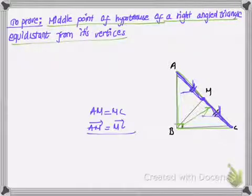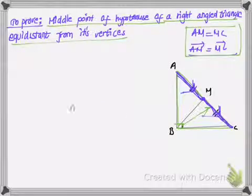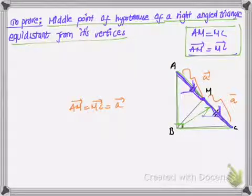Because they have the same direction and same magnitude. Now let us consider that AM is equal to vector A. So this is vector A.